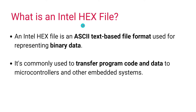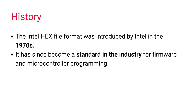Starting with the definition: the Intel hex file is an ASCII text-based file format which is used for representing binary data. It is mainly used in embedded systems and microcontrollers, and its purpose is to transfer program code and data to microcontrollers and other embedded systems. It was introduced by Intel in the 1970s and has since become an industry standard for firmware and microcontroller programming.